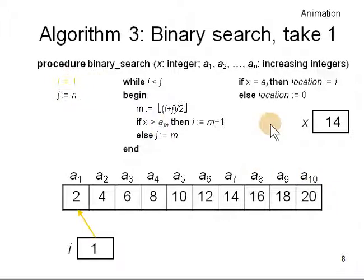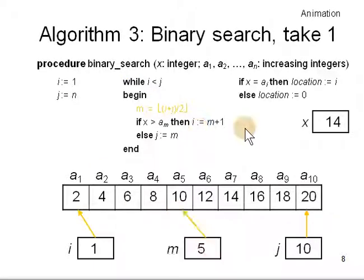i is 1, j is n. Now i less than j so you come here. m is the midpoint, 1 plus 10, 11 by 2 is 5.5 and floor is 5. Then x is greater than am, x is 14 is greater than am. Then i should be m plus 1. That means you move i, it is on this side. So you move this i point at a6.